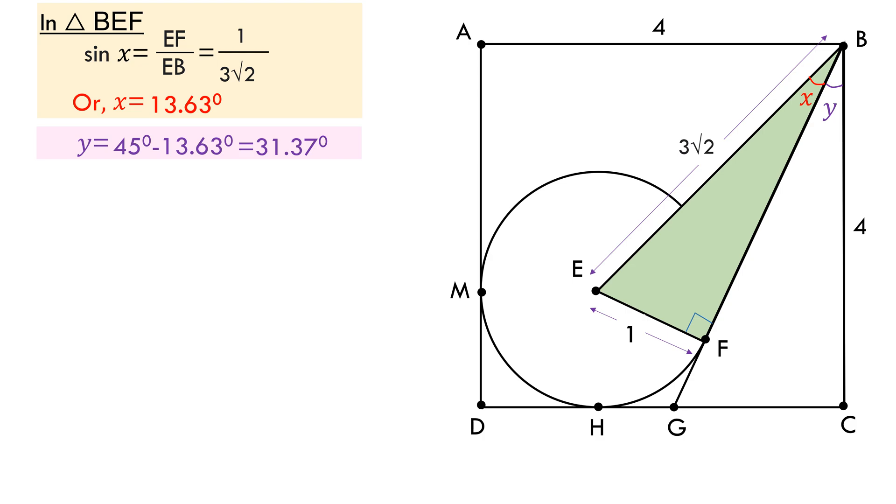Now in triangle BGC we have angle Y and we have side BC. We can use tangent ratio to find GC. We have tan Y equals GC by BC. This gives us the value of GC to be 2.44 units.